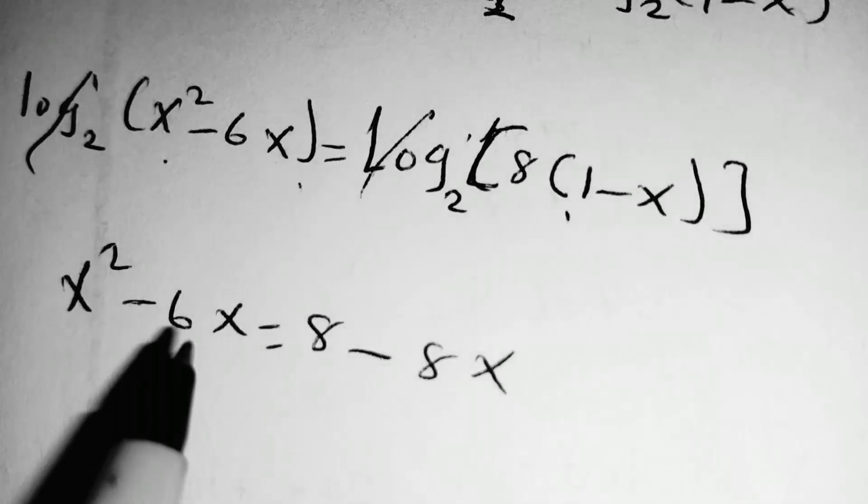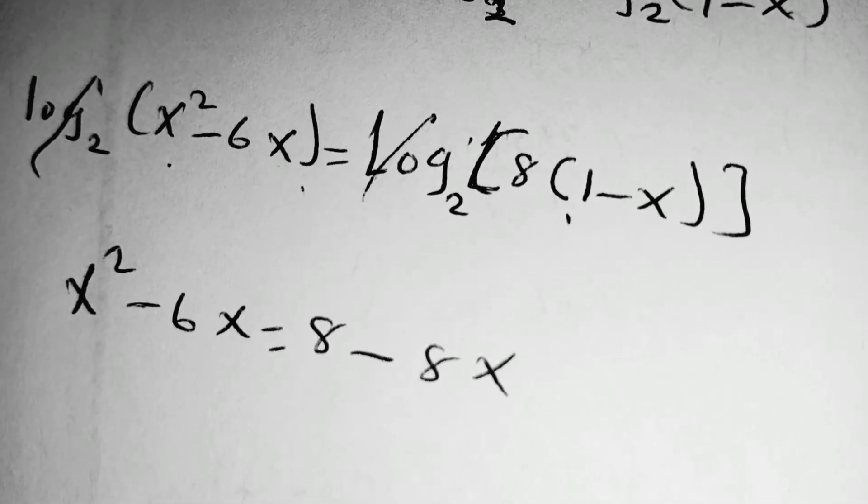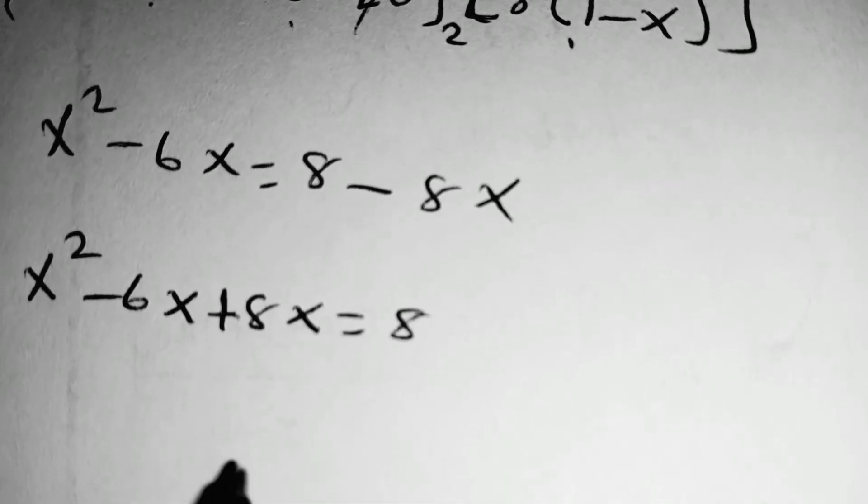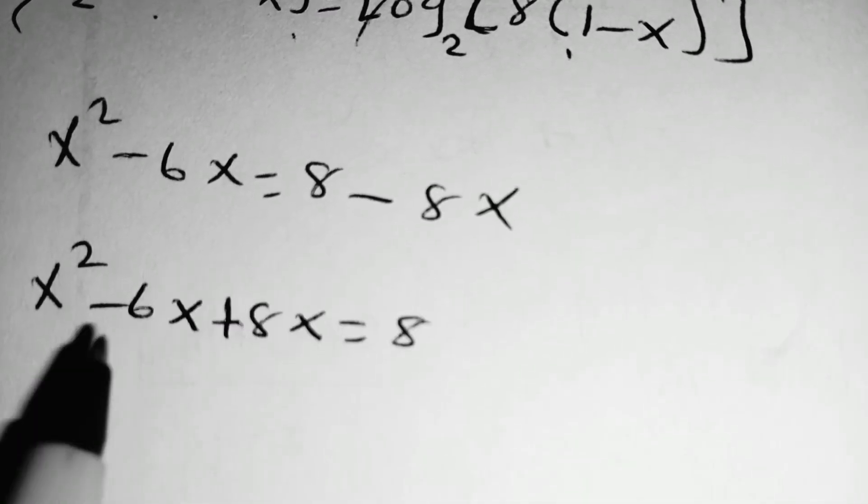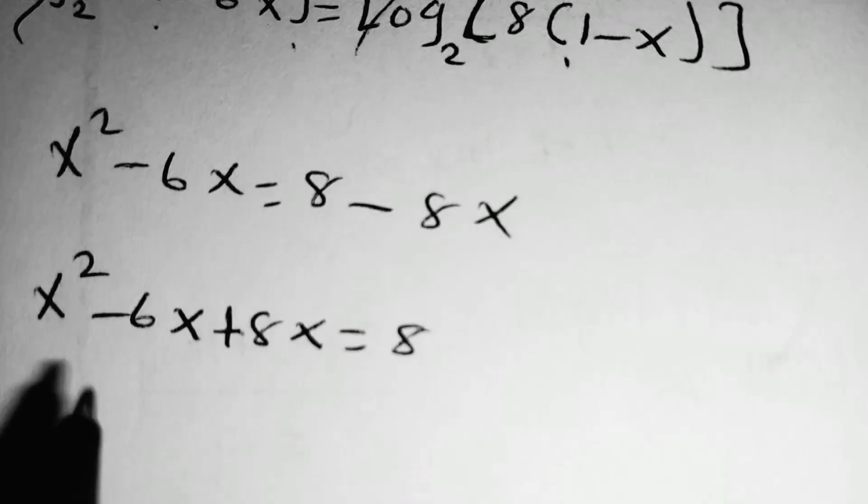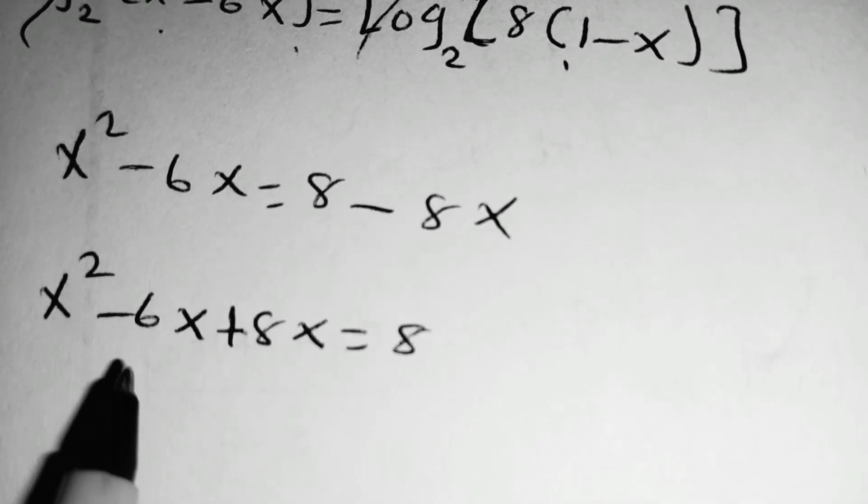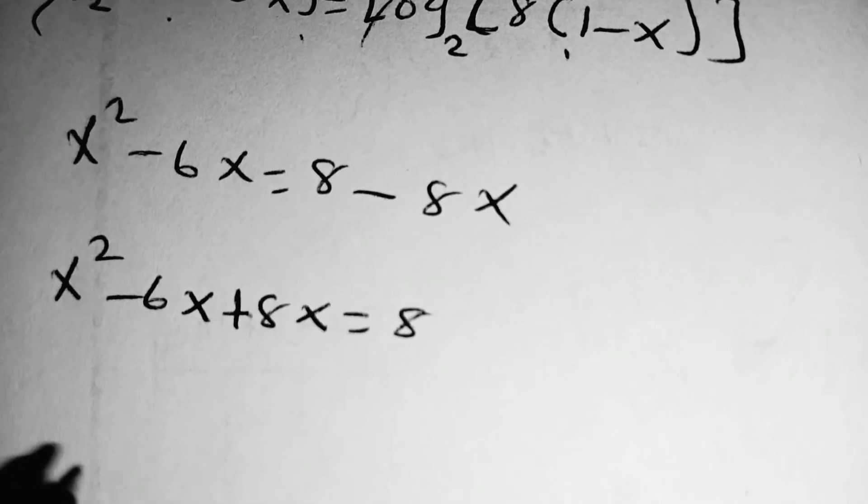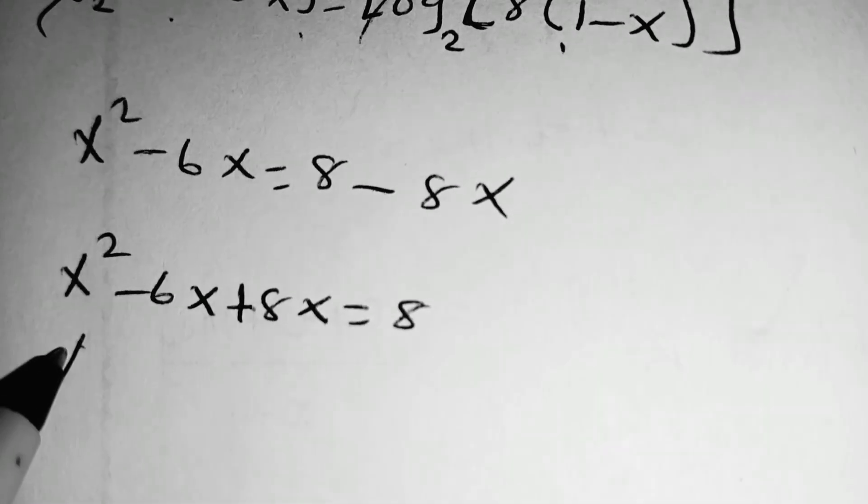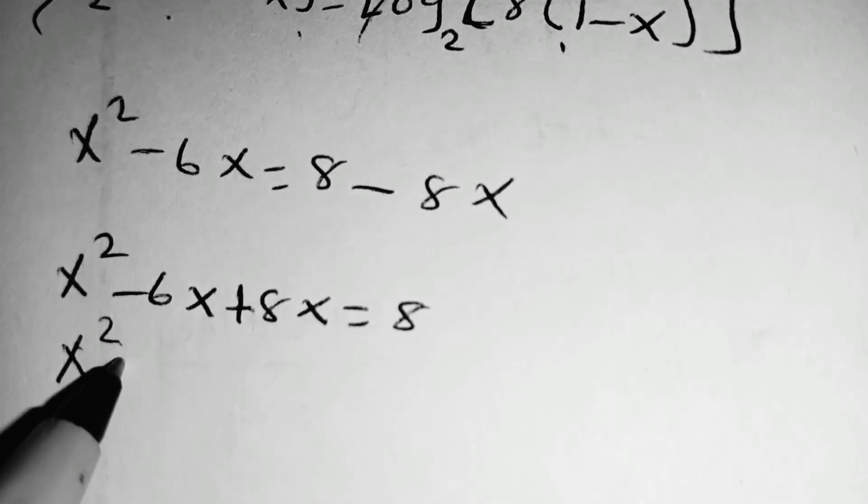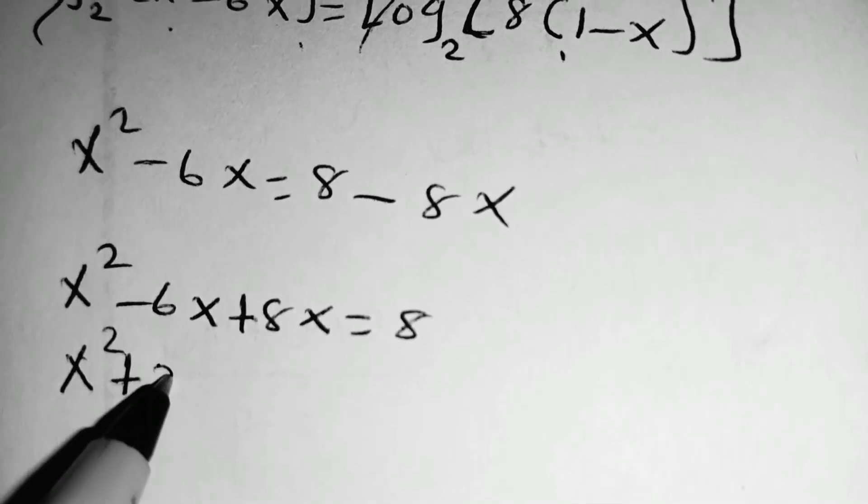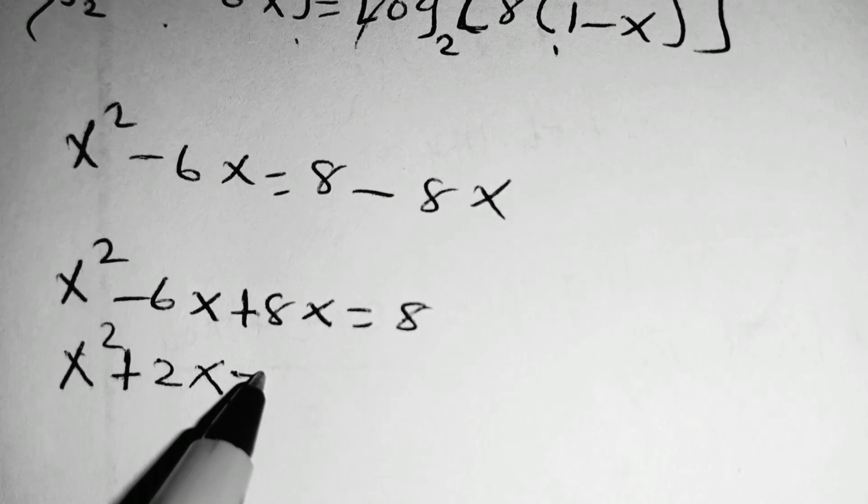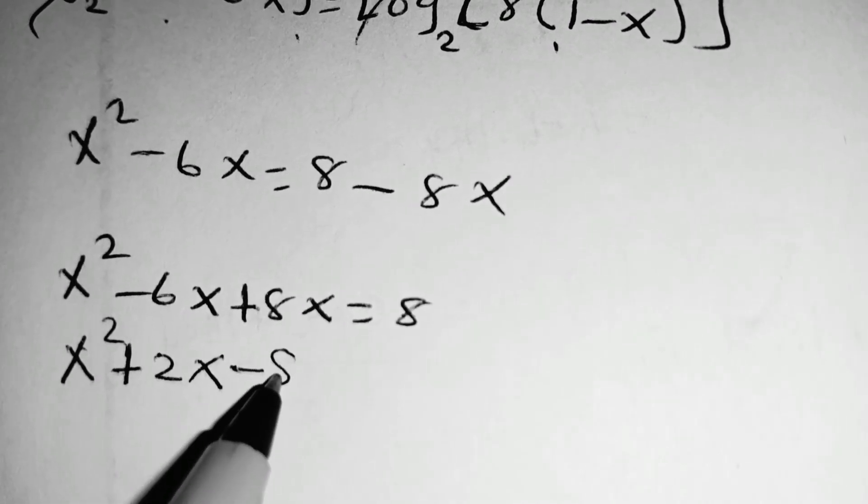The next step is we collect the like terms together. So taking the terms with x on the left hand side, it will become positive. Then you have x squared minus 6x plus 8x. At this point here, we shall have x squared plus 2x. Then we take 8 on the left hand side, so that we have minus 8.